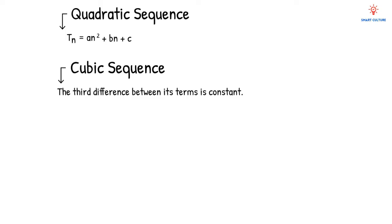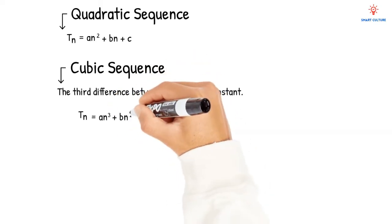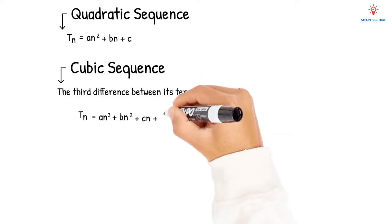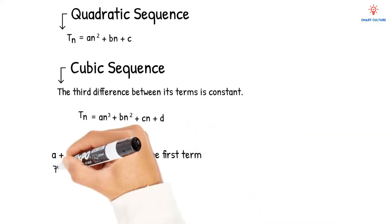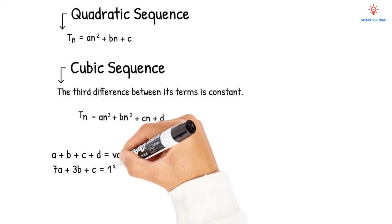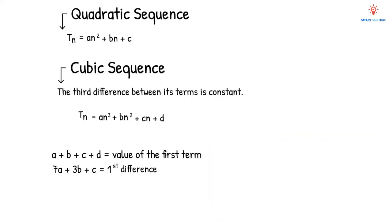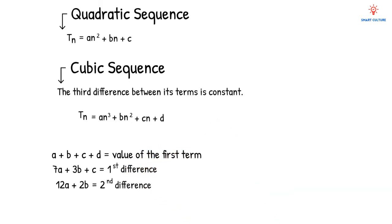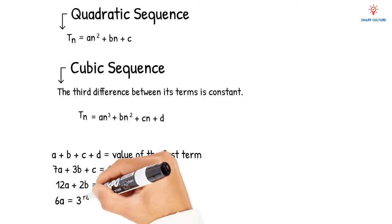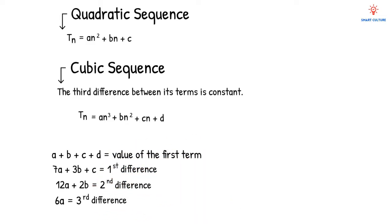When we work with cubic sequences we'll use a different formula: tn = an³ + bn² + cn + d. We can determine the rule for a cubic sequence by using the following four equations: a + b + c + d equals the first term; 7a + 3b + c equals the difference between the first two terms; 12a + 2b equals the first second difference; and 6a equals the third difference. Let's take a look at an example.